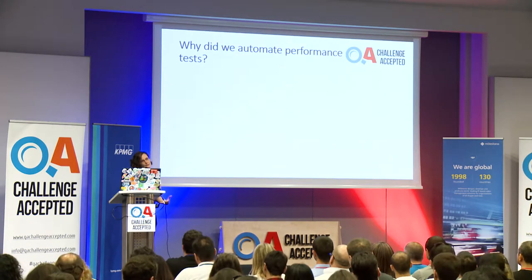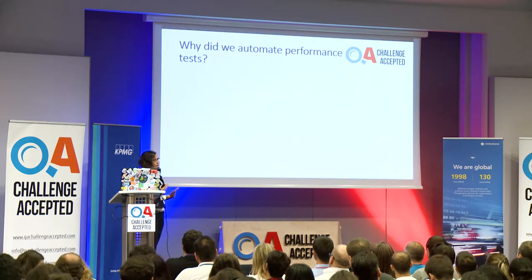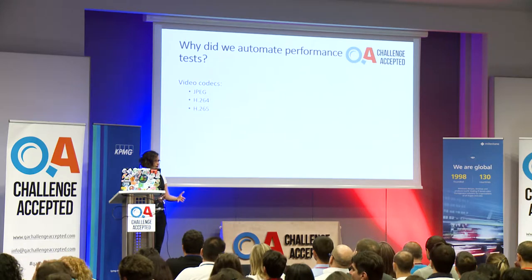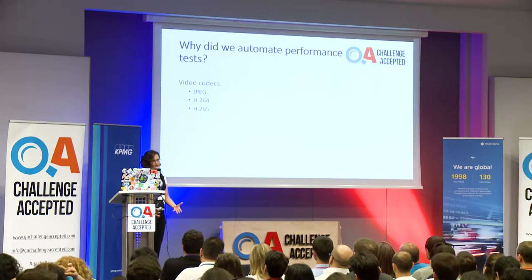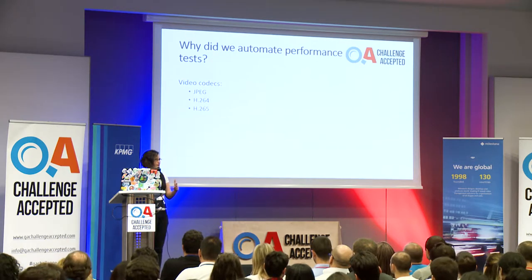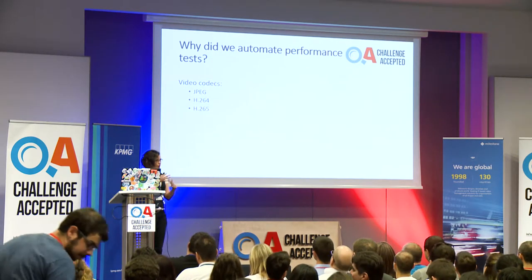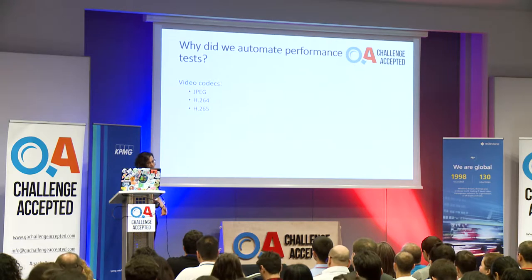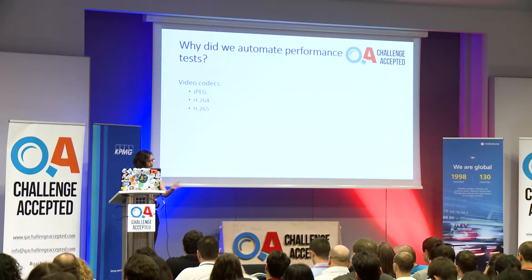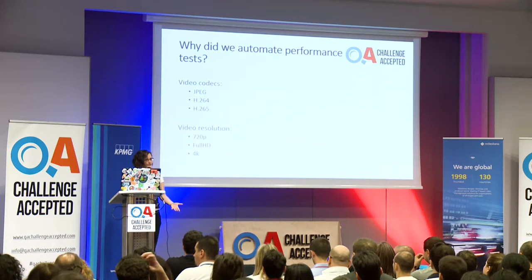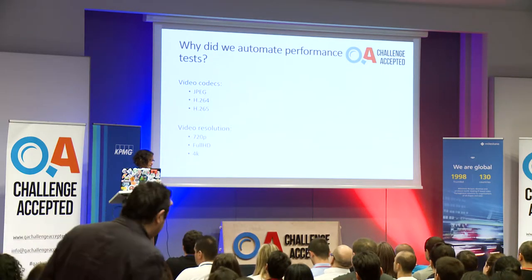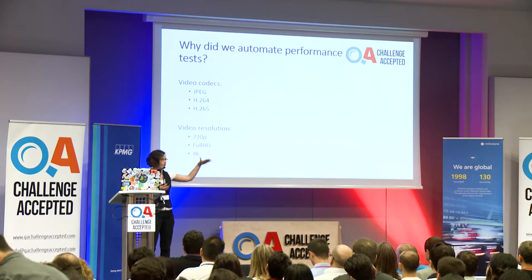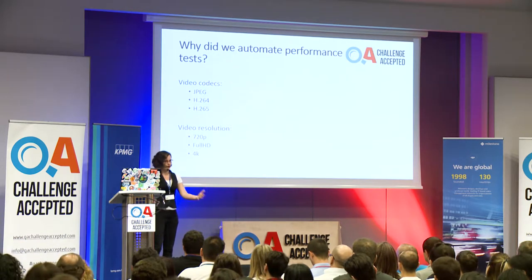So why did we actually decide to automate the performance tests? First of all, when we were testing video, there are multiple video codecs that we had to test. Video codecs are a way of encoding the stream so it can be seen by people. We had to test on different codecs, and on top of that we had to test different resolutions. There is a huge difference between having a tiny video displayed and having a 4K video displayed.